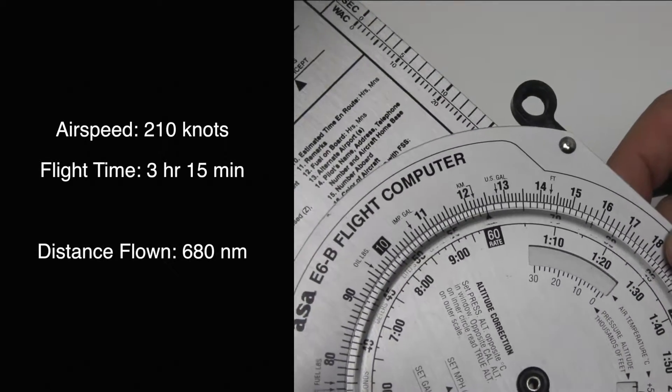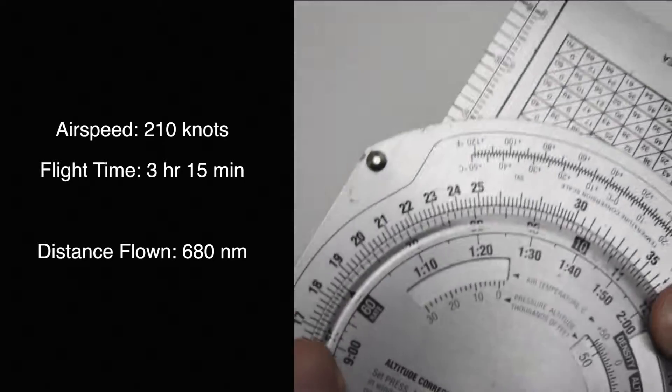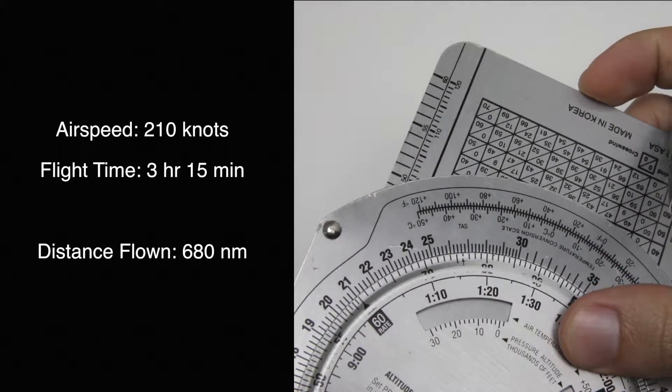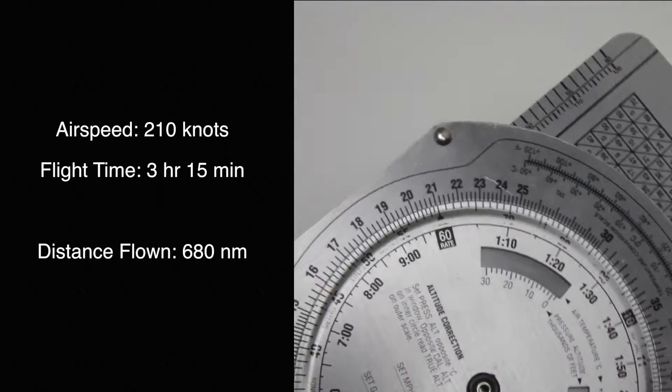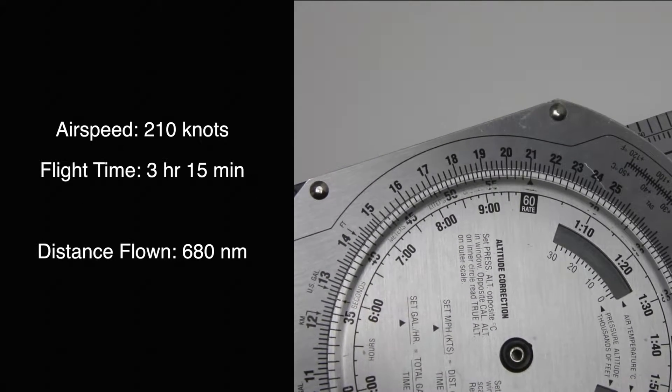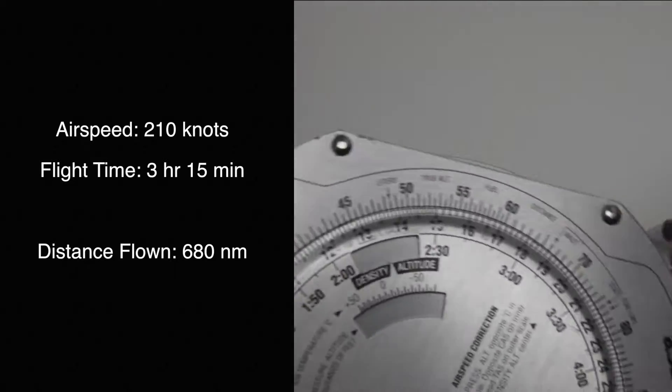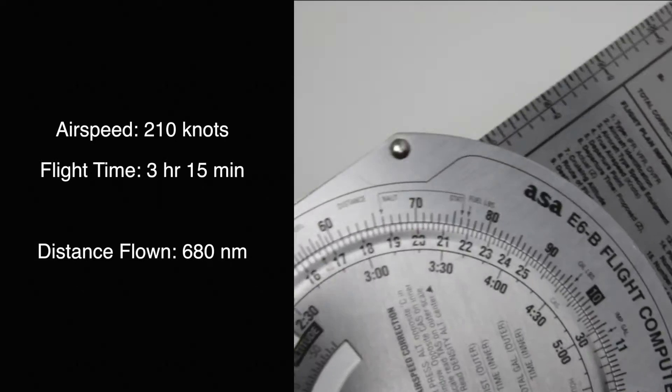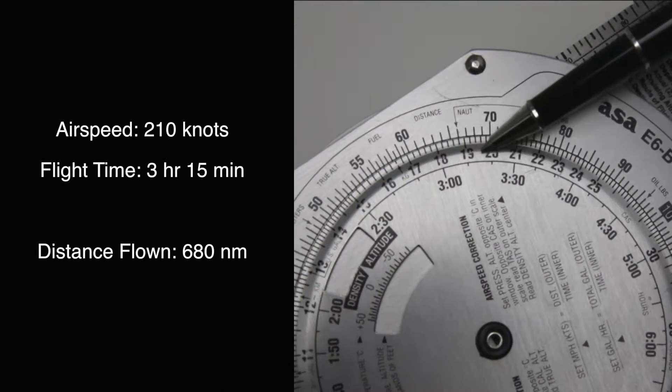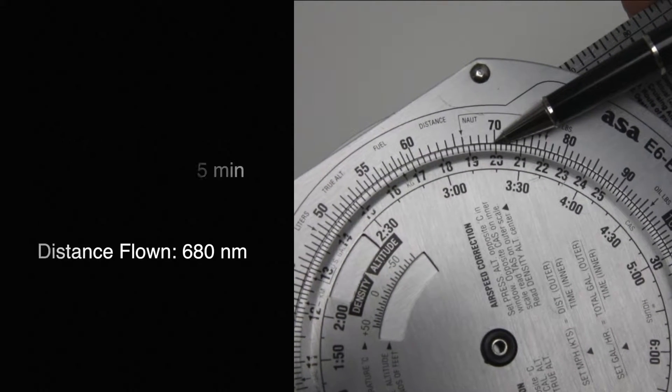For our second example, we're going to go 210 knots. So we're doing 210 knots and we're going for three hours and 15 minutes. We rotate till we have three hours and 15 minutes. That's ten, that's 15, so right about here we're looking around 680 miles.